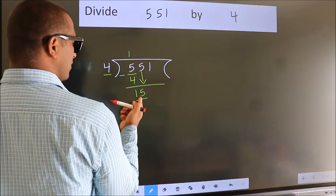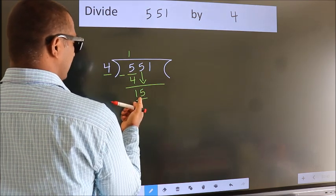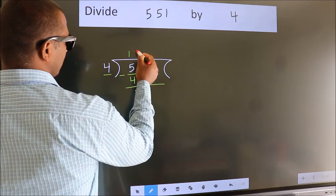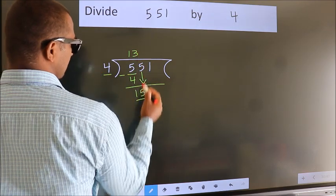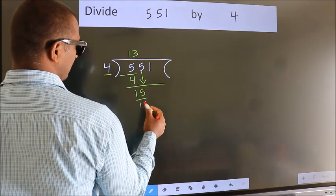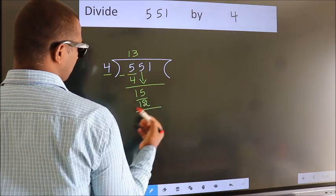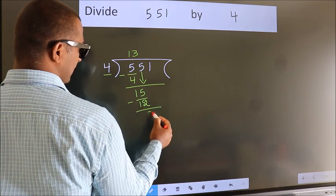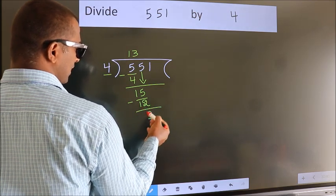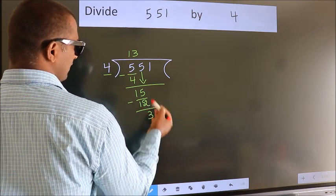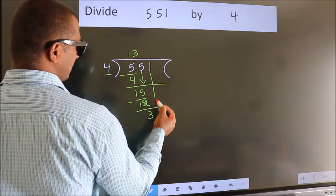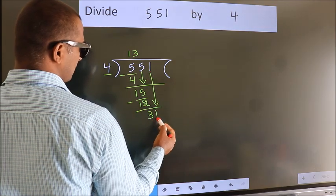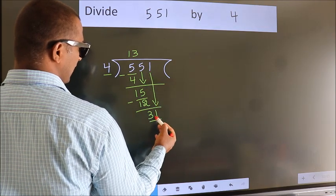A number close to 15 in the 4 times table is 4 threes 12. Now we subtract — we get 3. After this, bring down the beside number, so 1 down, so 31.